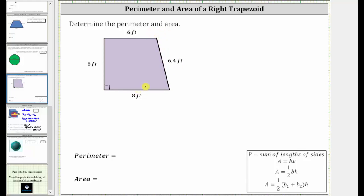To find the perimeter, we can think of walking around the outside of the trapezoid, and therefore the perimeter is equal to eight feet plus six feet plus six feet plus 6.4 feet.